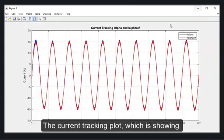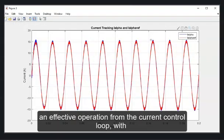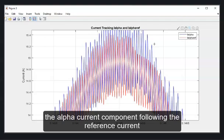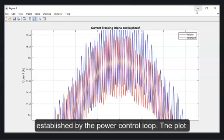The current tracking plot, which is showing an effective operation from the current control loop, with the alpha current component following the reference current established by the power control loop.